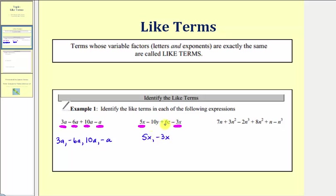Notice how the two middle terms, negative 10y and 6z, don't have the same variable factors and therefore don't have any like terms in this expression.